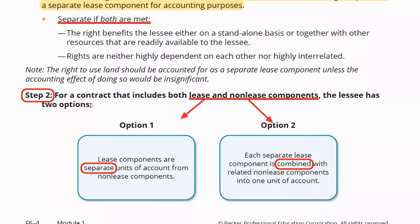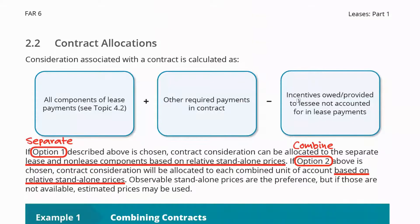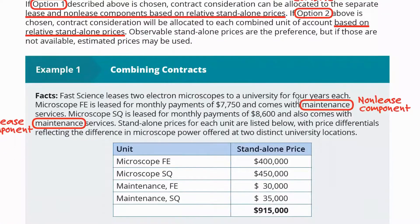For a contract that includes both lease and non-lease components, you have two options: either treat the lease components as separate units of account from non-lease components, or treat each separate lease component combined with a related non-lease component into one unit of account. For contract allocation, you look at the components of the lease, identify how you're going to benefit from each of those obligations performed by the lessor, and classify accordingly.